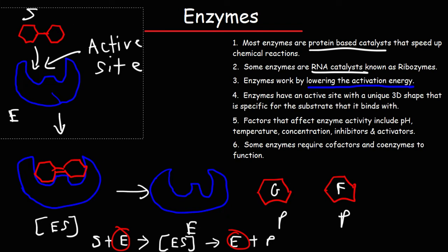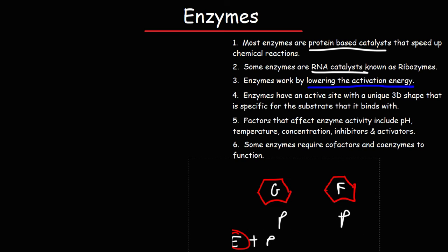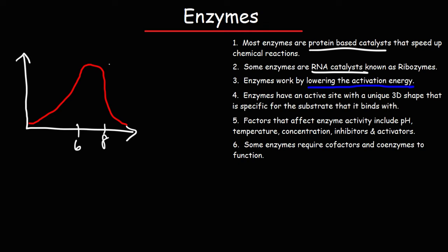Now let's look at the factors that affect enzyme activity. The first one is pH. Enzymes have an optimal pH at which they work best. Most enzymes have an optimal pH somewhere between 6 and 8, because your body has a pH in that range. The optimal pH is the x-value at the peak of the curve — in this example, around 7 — where the enzyme works at its highest rate. Some enzymes have an optimal pH outside of 7; for instance, pepsin has an optimal pH between 2 and 3 because it exists in the stomach under acidic conditions.